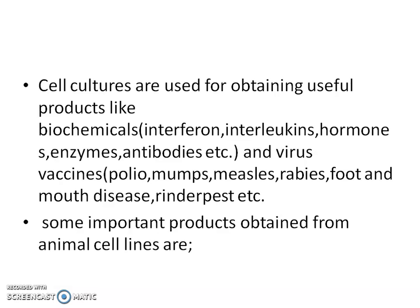Four important hormones used in cell culture are: luteinizing hormone, follicle-stimulating hormone, chorionic hormone, and erythropoietin.